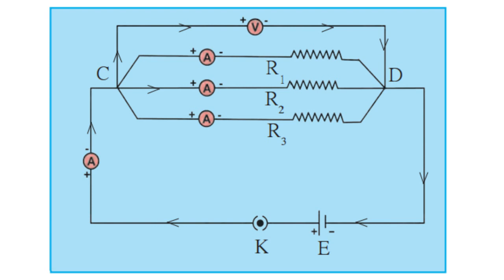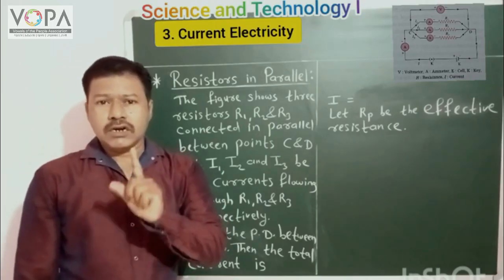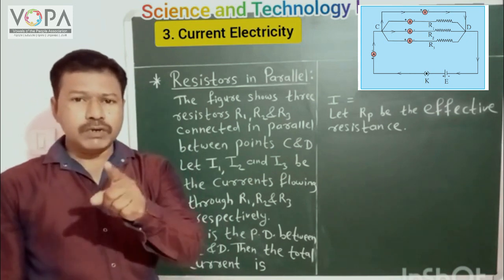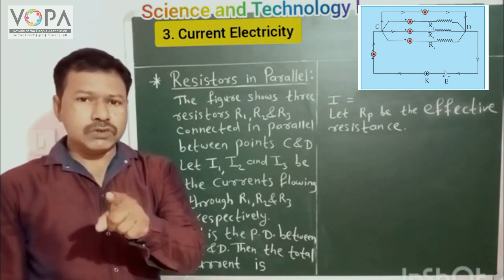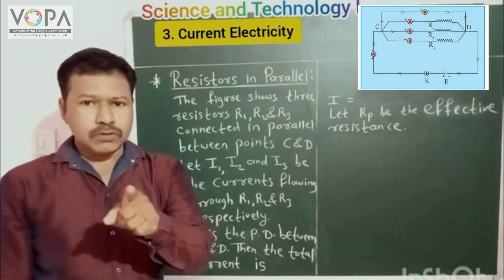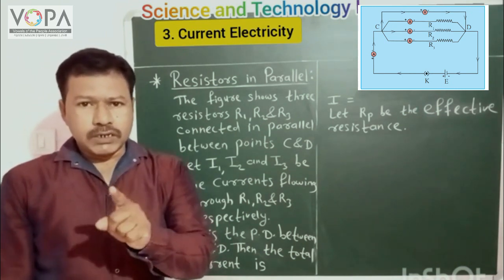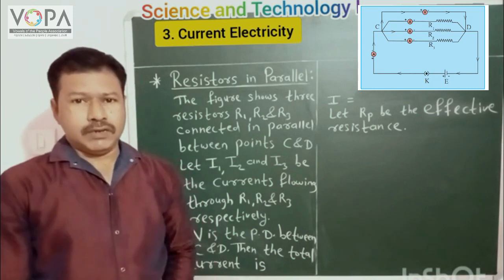The resistors are connected with an ammeter and a voltmeter. The ammeter is used to measure the current and the voltmeter is used to measure the potential difference. The ammeter is denoted by capital A and the voltmeter is denoted by capital V.